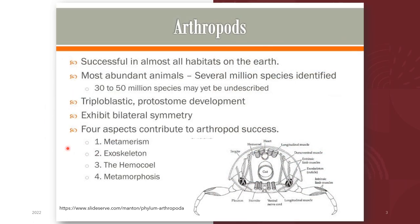It is said that arthropods are successful in almost all habitats on Earth. They are considered to be one of the most abundant animals. Several million species of arthropods have been identified, and there are more species that are yet to be described.